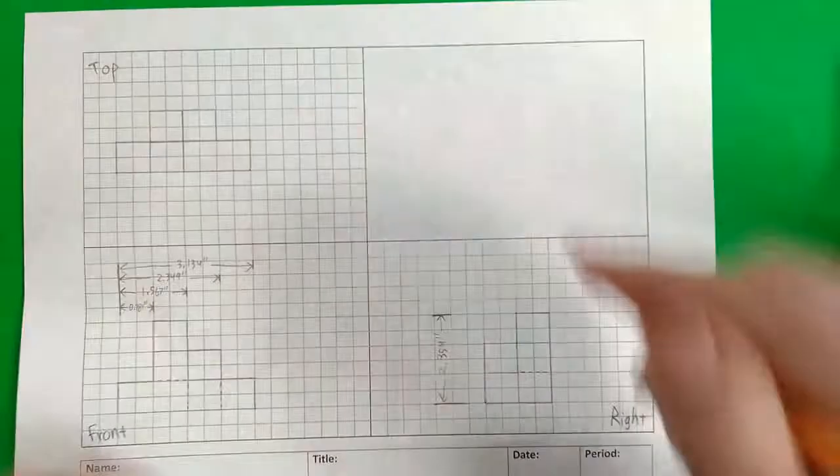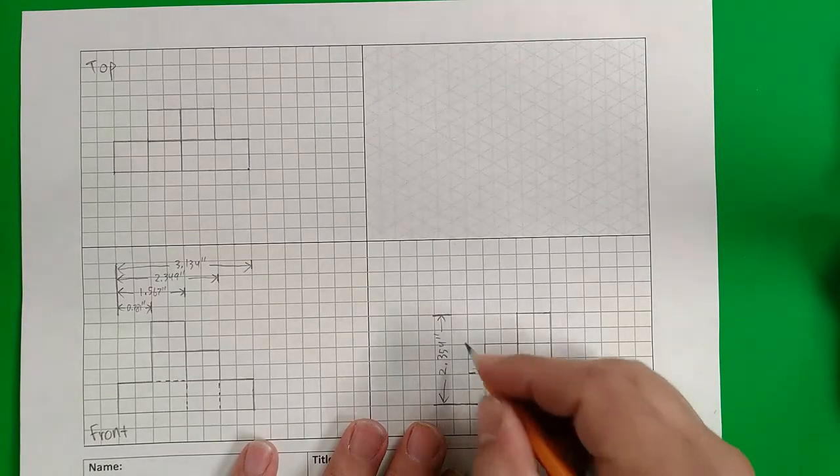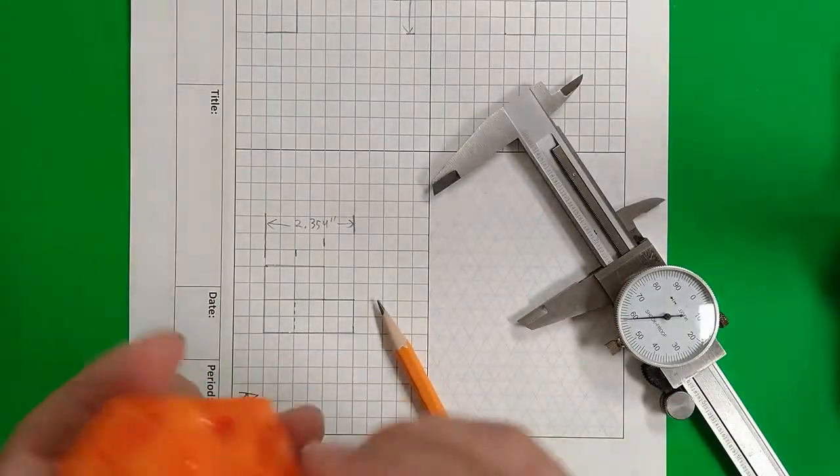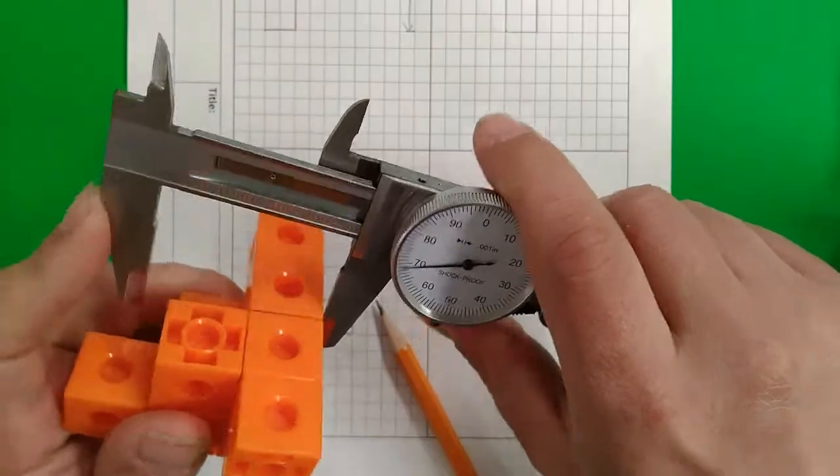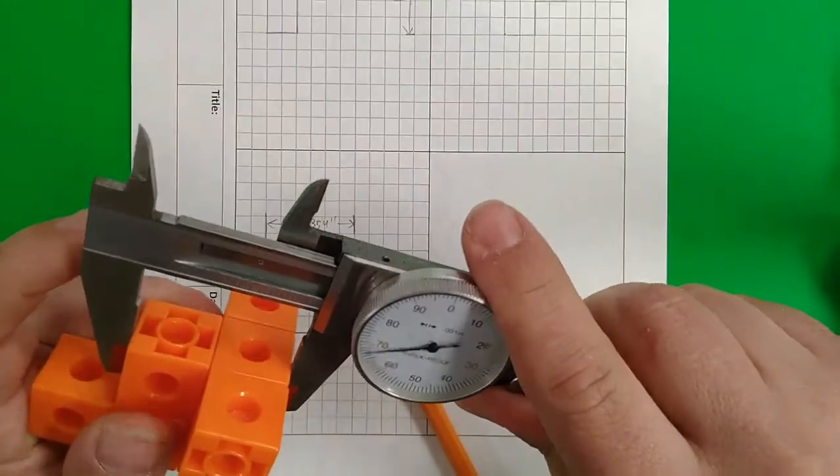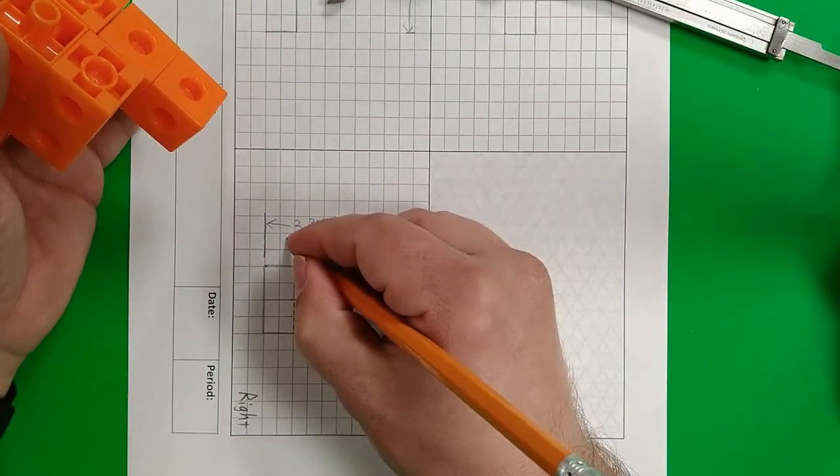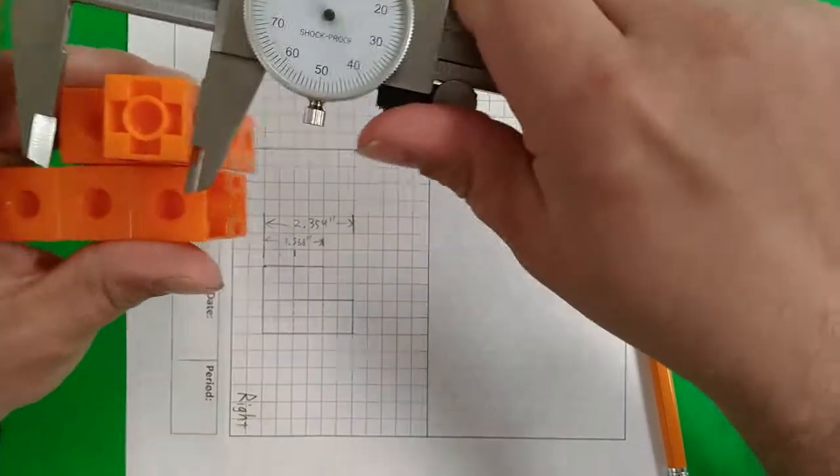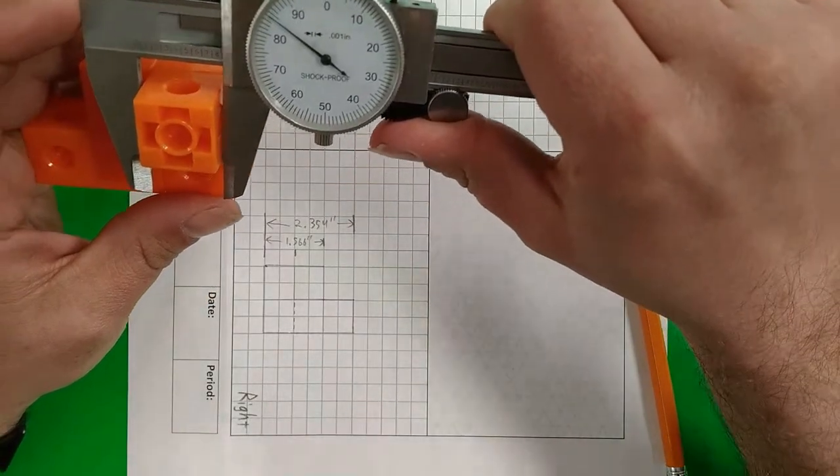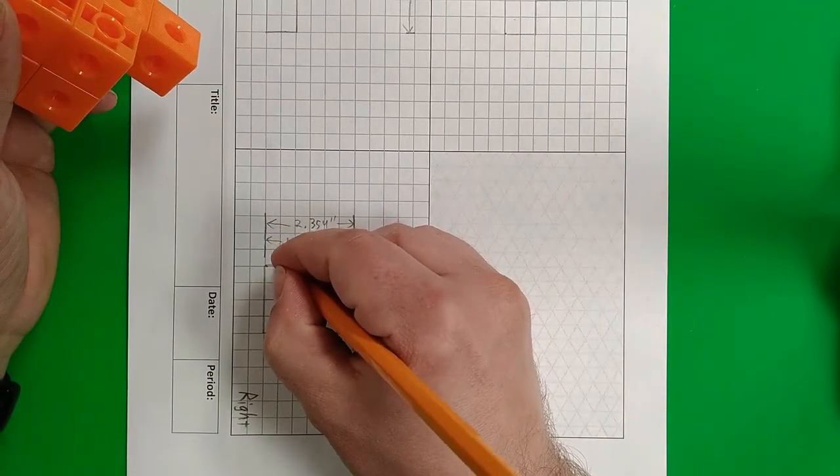And then I need a measurement for this section and a measurement to here. So I could just measure this part here. So for that measurement, we have 1.566. 1.566. And for the individual cube, we have 0.784. 0.784.